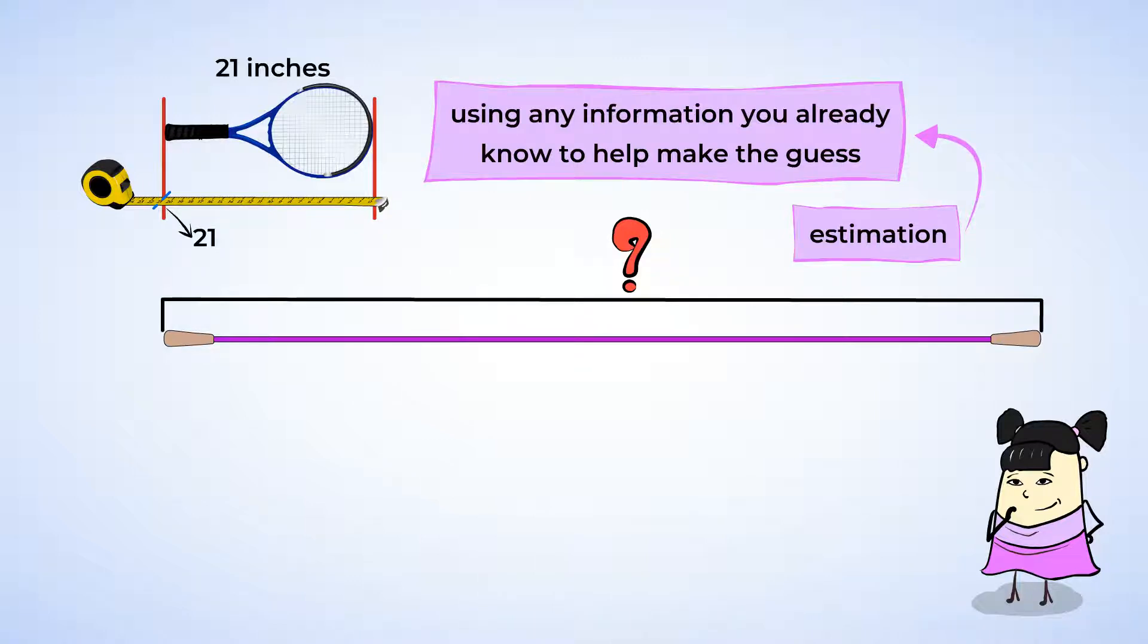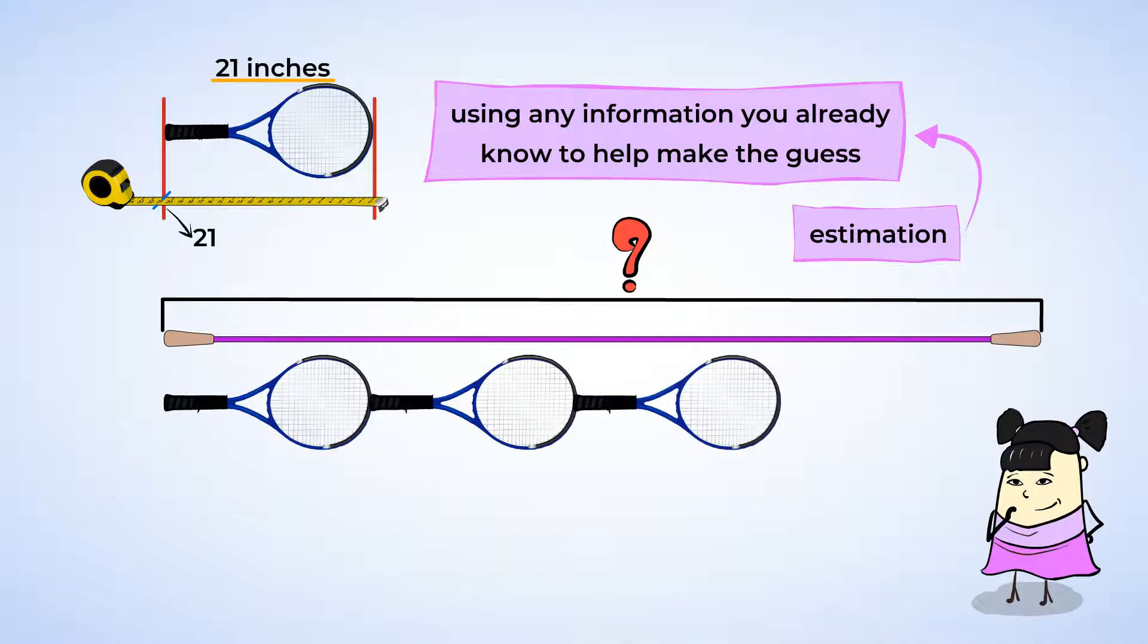We know that the tennis racket is 21 inches long. We can estimate how long the rope is by drawing a copy of the tennis racket next to the first one we have. And another one. The rope is almost covered.